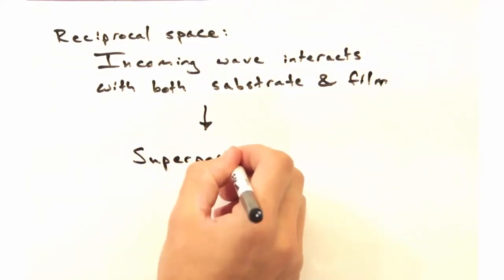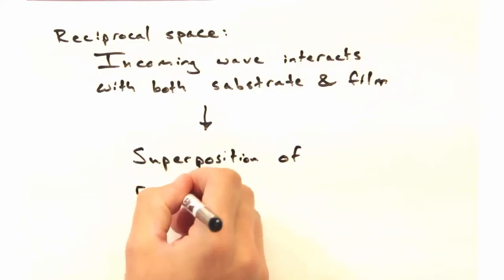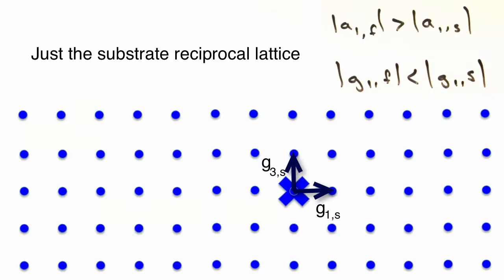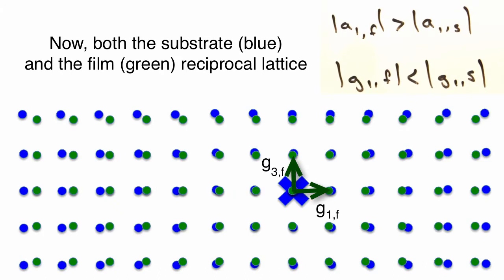We can then create a reciprocal space made of the superposition of the thin film and substrate reciprocal lattices, with the G1 direction pointing to the right and the G3 axis pointing up. And because the thin film has a bigger lattice in real space, it has a smaller reciprocal cell.